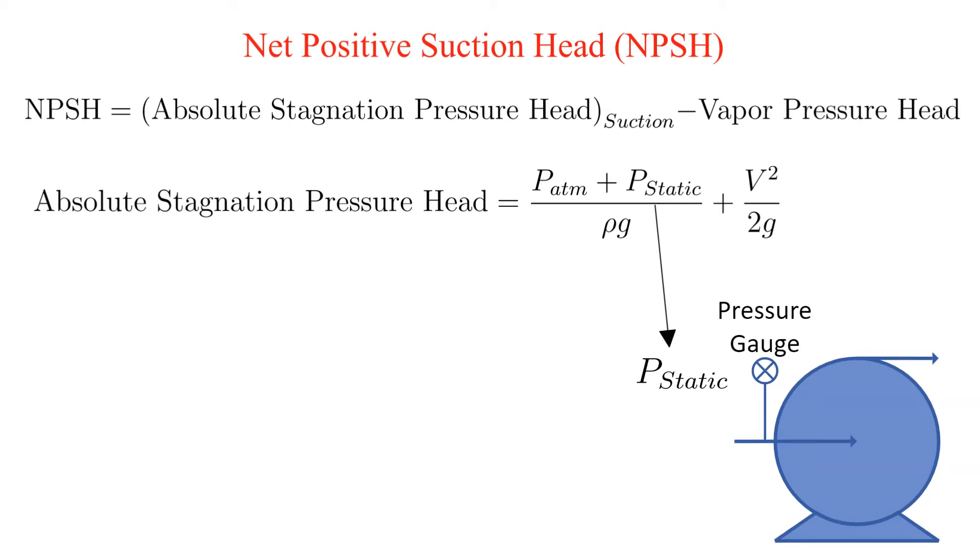You will sometimes see NPSH defined as the absolute total pressure head at the pump suction minus the vapor pressure head. These two definitions are equivalent. The datum is defined at the pump suction so the elevation z at that point is equal to zero. At the datum, the absolute total pressure head is the same as the absolute stagnation pressure head.